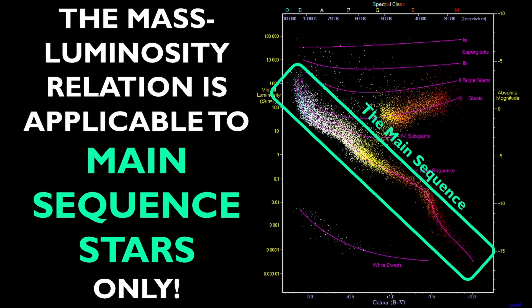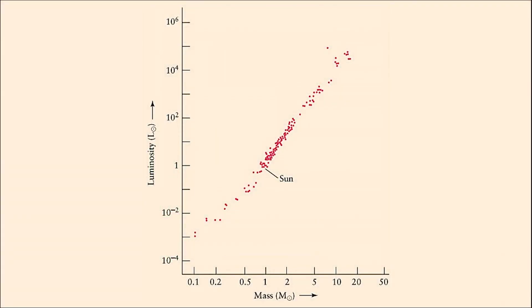There are variations of this law that work for the other groupings of stars, but in this class, we'll only focus on the one applicable to the main sequence. When you plot the mass and luminosity of a whole handful of stars, you start to see a trend like this.